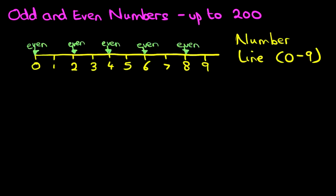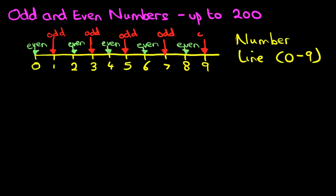Now we've done this before, so I'm sure you know this. All the other numbers are odd numbers. So let's put those in. 1 is an odd number, and from 1 we count in 2s, and all of those will be the odd numbers. So after 1 it's 3, after 3 it's 5, after 5 it's 7, and the last one is 9. So those are all the odd and even numbers from 0 to 9.